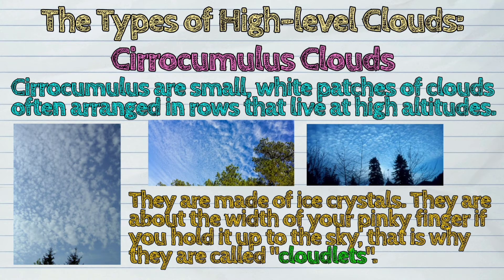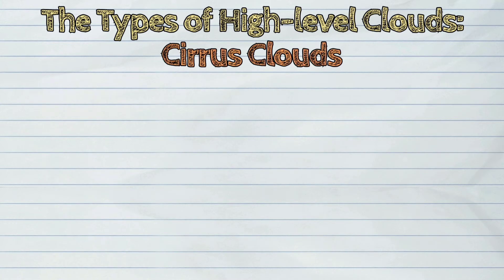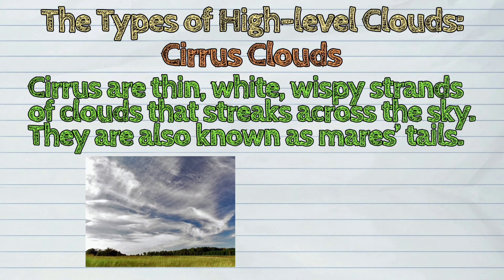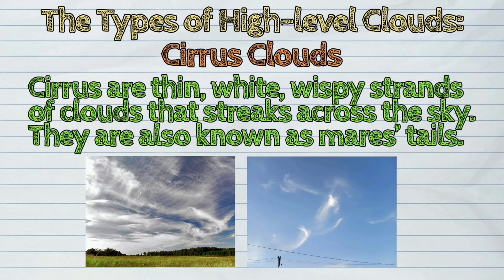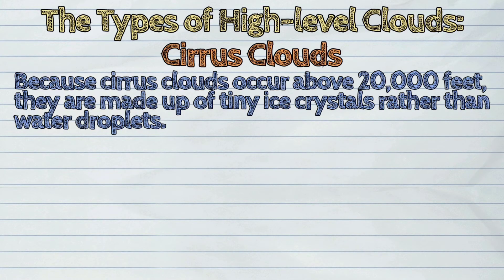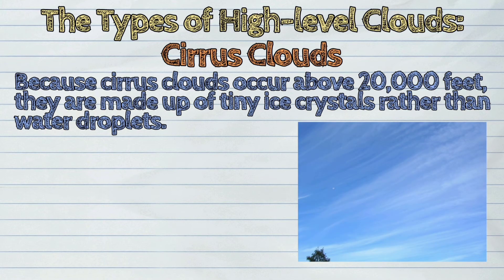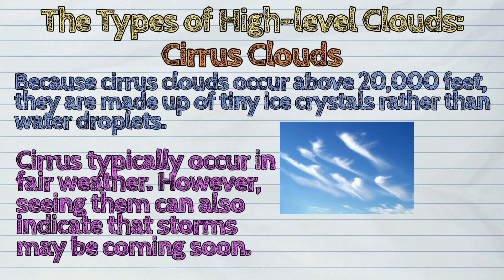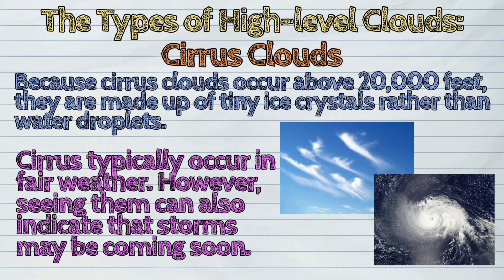The third type is the cirrus clouds. Cirrus are thin, white, wispy strands of clouds that streak across the sky. They are also known as mare's tails. Because cirrus clouds occur above 20,000 feet, they are made up of tiny ice crystals rather than water droplets. Cirrus typically occur in fair weather; however, seeing them can also indicate that storms may be coming soon.